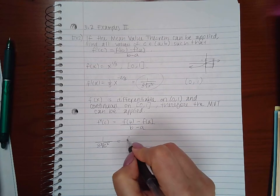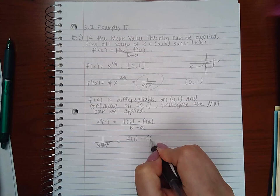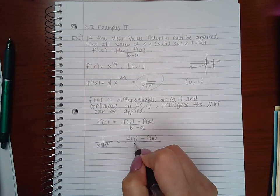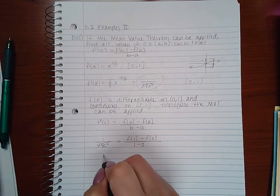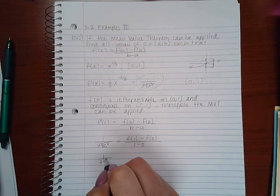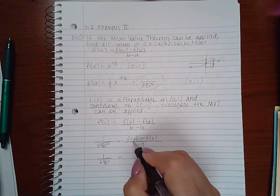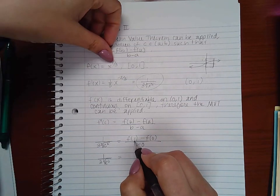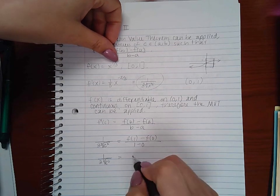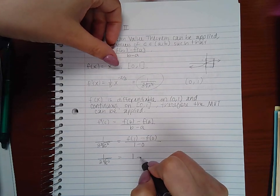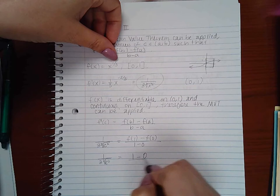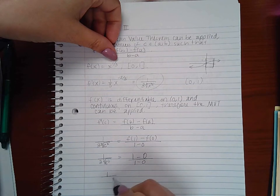f(b) would be f(1) minus f(0) over 1 minus 0. f(1) is 1 to the 1/3 power which is 1, and 0 to the 1/3 power is 0, so I get this equation here: 1.